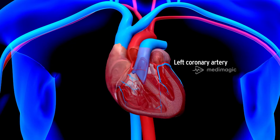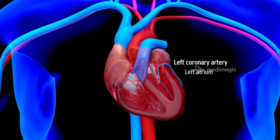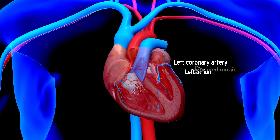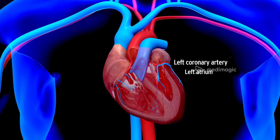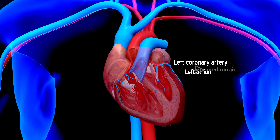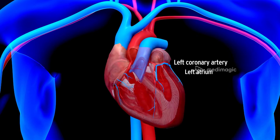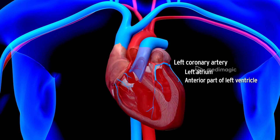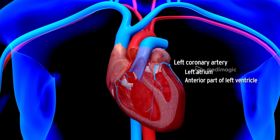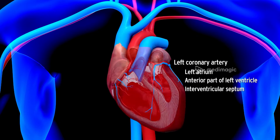The left coronary artery divides into two branches: the left anterior descending artery and the circumflex artery. It mainly supplies the left atrium, the left ventricle, and the anterior part of the interventricular septum.